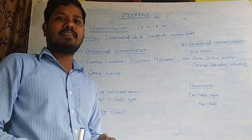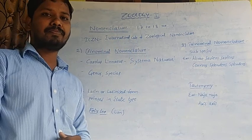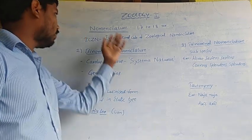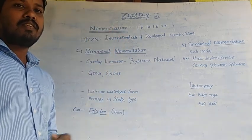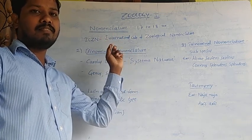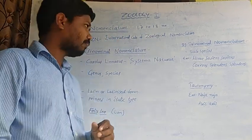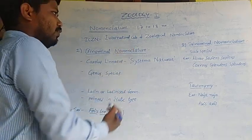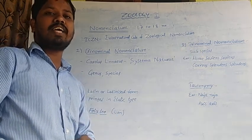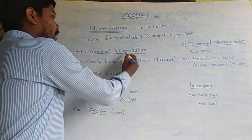The process of naming animals with a specific scientific name is called nomenclature. This is done as per the guidelines of ICZN — the International Code of Zoological Nomenclature. It includes two types: binomial nomenclature and trinomial nomenclature.